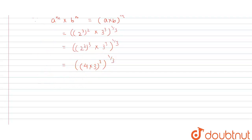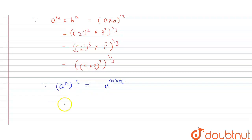We use another formula which says: (a^m)^n = a^(m×n). After using this formula we can write this as (4 × 3) whole raised to power 3 × 1/3. So the 3 and 3 cancel, and this value comes out to be 12.